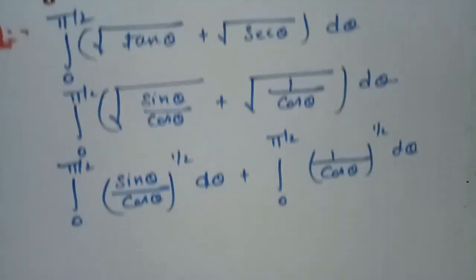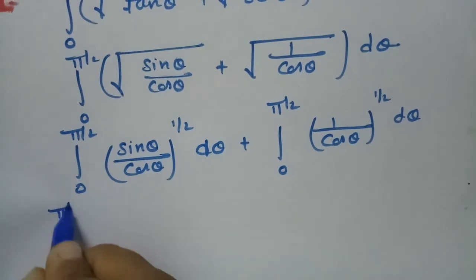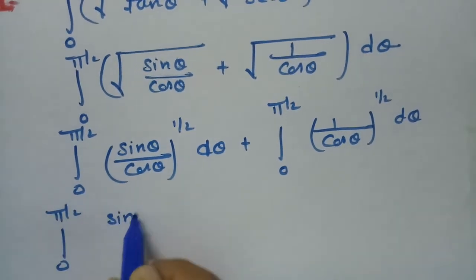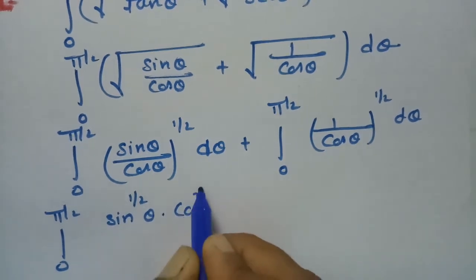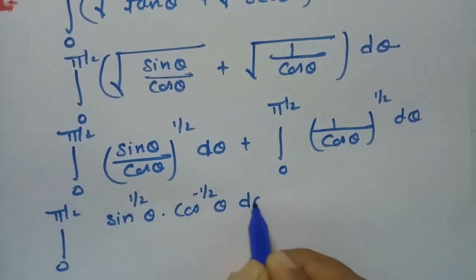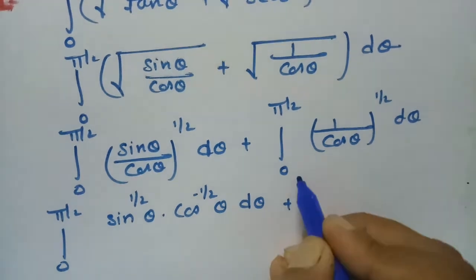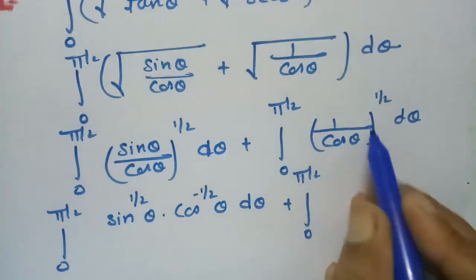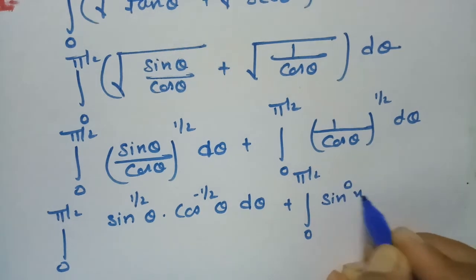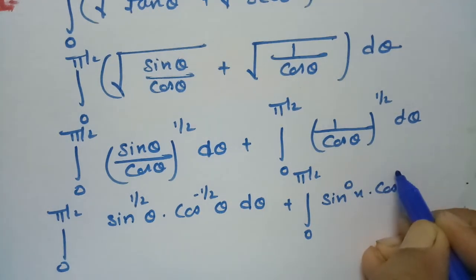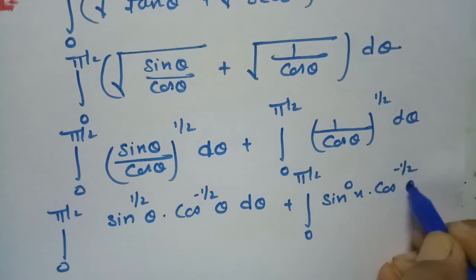This can be rewritten as the integral from 0 to π/2 of sin θ^(1/2) · cos θ^(−1/2) dθ plus the integral from 0 to π/2 of sin θ^0 · cos θ^(−1/2) dθ, putting each integral into the standard beta integrand form.